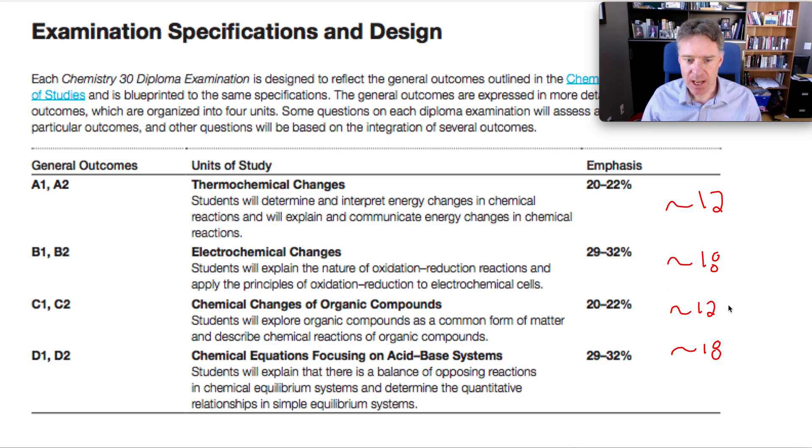When you start breaking down the question count, particularly in something like organic, there's only 12 questions. You can start making a rough guess. There's probably four or five naming, there's maybe four or five reaction questions. And that only leaves four more for boiling points and solubility and all the other type of questions.